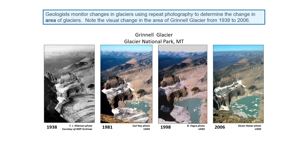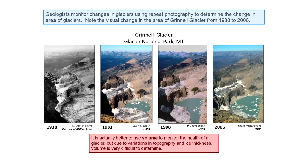How do we monitor changes in glaciers? We can use photography. Here are aerial photographs of the Grinnell Glacier in 1938, 1981, 1998, and 2006 — which is actually the year I saw the remnants of the Grinnell Glacier. We use photography to determine changes in the area of glaciers, but it's actually better to use the volume of ice within a glacier to give us an idea of the health of the glacier. That can be hard to do though. There are techniques to figure out the elevation of the land beneath the glacier, but it can be challenging to determine variations in topography under the ice and how thick the ice is. So ice volume is difficult to determine, and a lot of times we will use area, which is what you'll be using in today's lab.